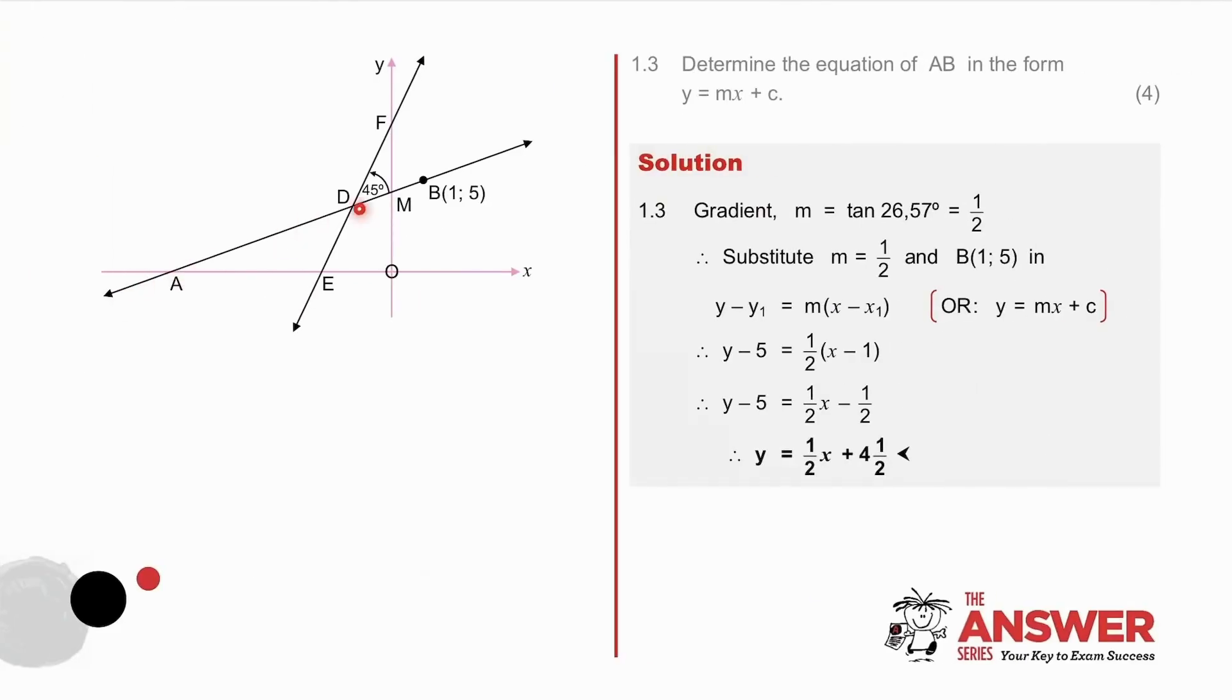The equation of AB. B is a point on the line and the gradient is equal to the tan of the angle of inclination. Therefore M, the gradient, is a half. So we substitute M equal to a half and the point in either of the forms of the equation of a straight line, and we arrive at this equation as requested in standard form.